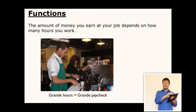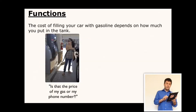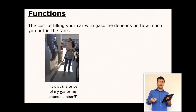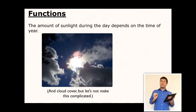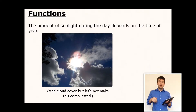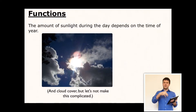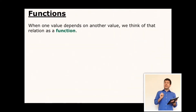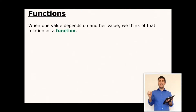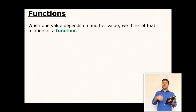The amount of money your paycheck has is affected by the number of hours that you work. Also, if you're going to fill your car up with gas, the cost depends on how much you put into the tank — and fluctuating gas prices, but let's not complicate things. Also, the amount of sunlight during the day depends on the time of year: in summer there's more daylight, and in winter there's less. So when one value is dependent upon another value, in math we think of that relation as a function.